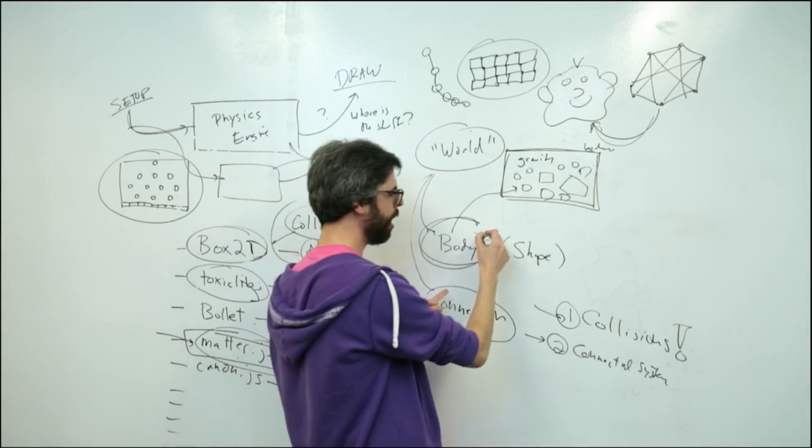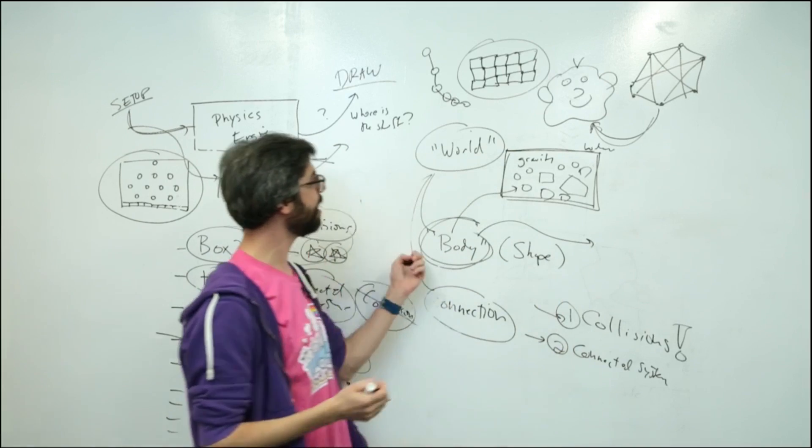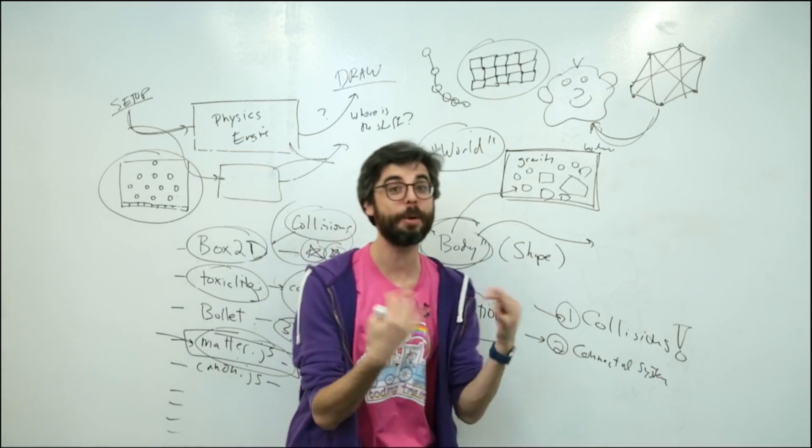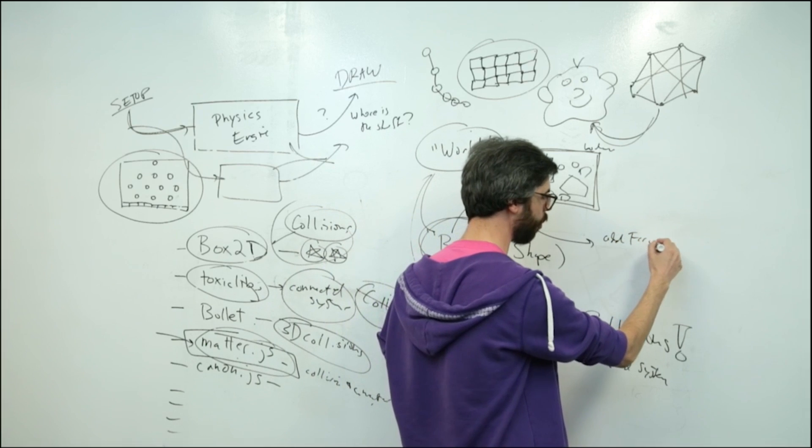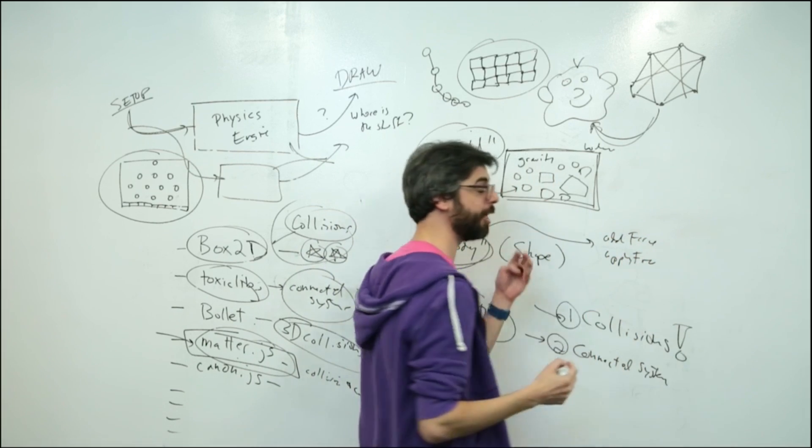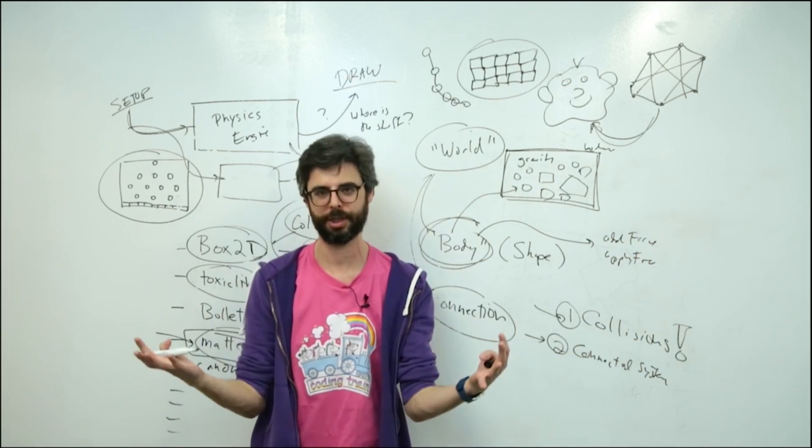So most of the physics engines are going to have a mechanic for this. For example, the body object, you create this body object, you put it in the world, you can keep a reference to that body object and later you might be able to call a function called, like, add force or apply force to cause the body to experience maybe a sudden gust of wind, for example.